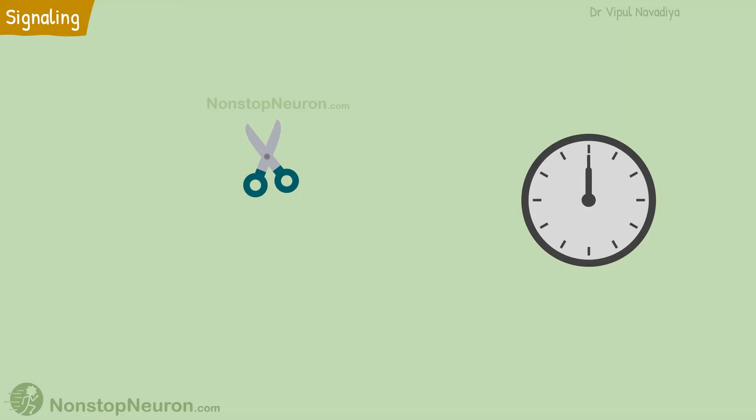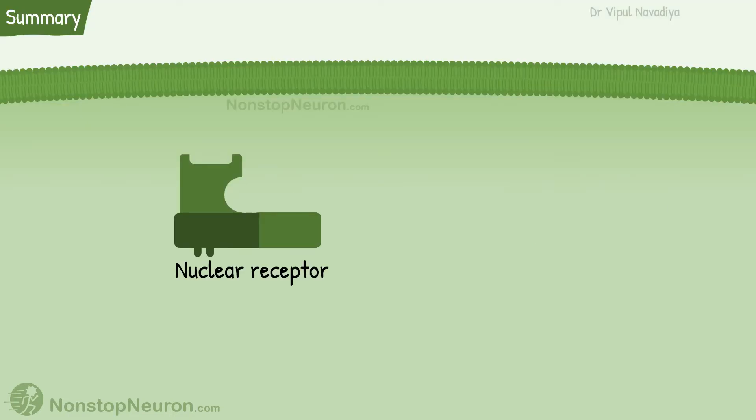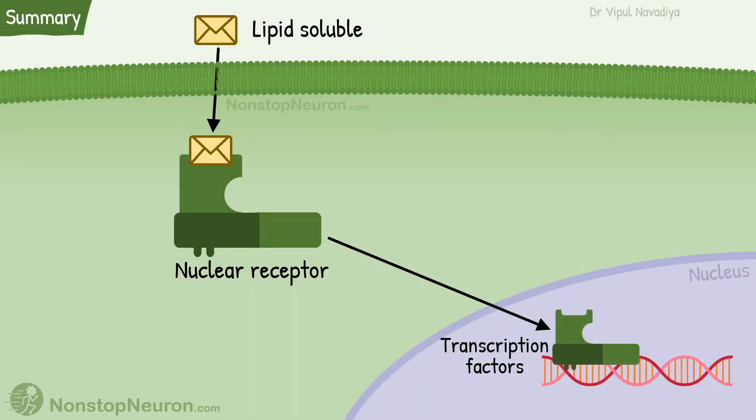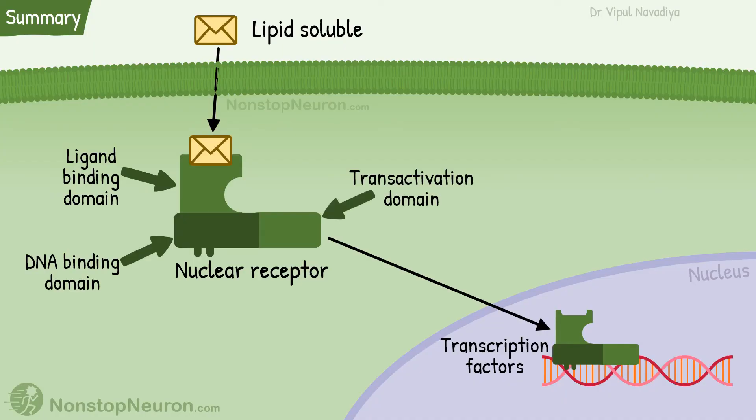So that was an example of signaling by nuclear receptor. Now let's have a quick summary. Nuclear receptors are located inside the cell. They bind with a lipophilic ligand molecule. They are transcription factors. They have a ligand binding domain, DNA binding domain, and transactivation domain.